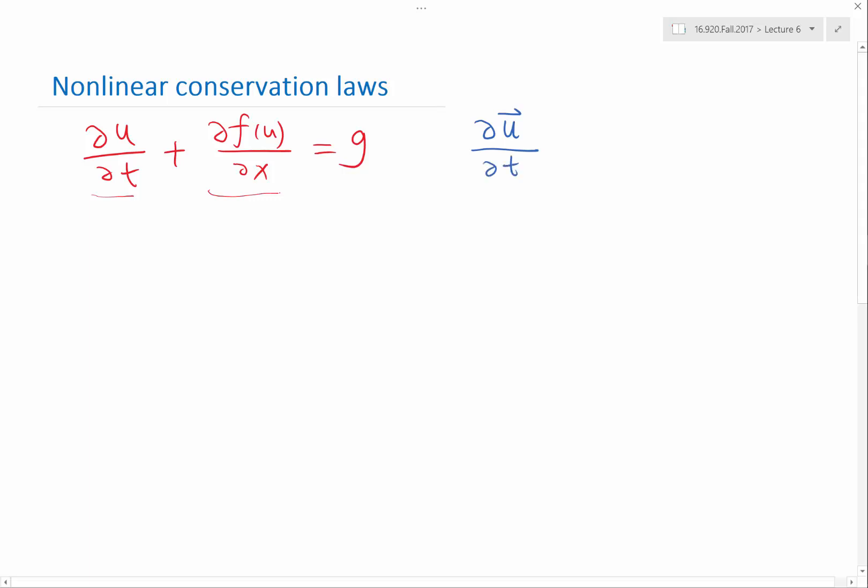So partial vector u partial t plus a divergence of f. f in this case is a tensor, a function of u, is equal to g.